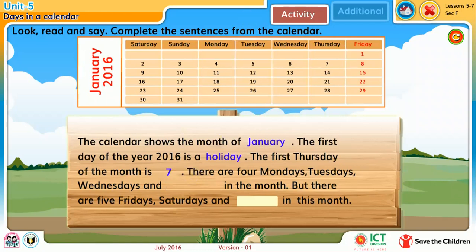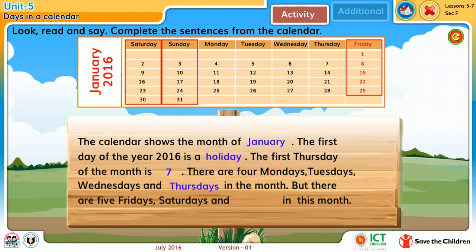There are 4 Mondays, Tuesdays, Wednesdays and Thursdays in the month. But there are 5 Fridays, Saturdays and Sundays in the month.